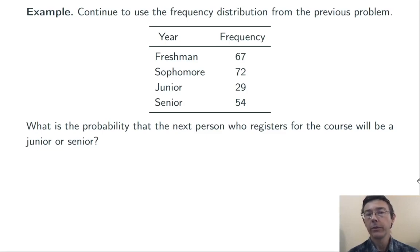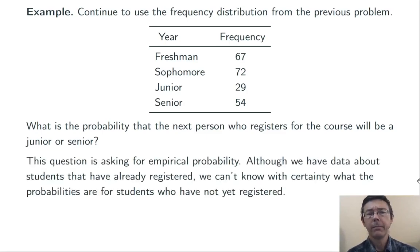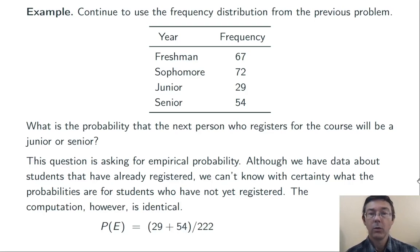Let's stick with the same frequency distribution and ask a slightly different question. What's the probability that the next person who registers for the course will be either a junior or a senior? This time, we're asking for empirical probability. We have data about students that have already registered, but we're interested in the next person who will register. We can't know with certainty what that probability will be. However, the calculation is going to be basically the same. We're going to compute the number of students that have already registered that are juniors or seniors, so 29 plus 54, and divide by the total number of students that have already registered, to get 37.7%.